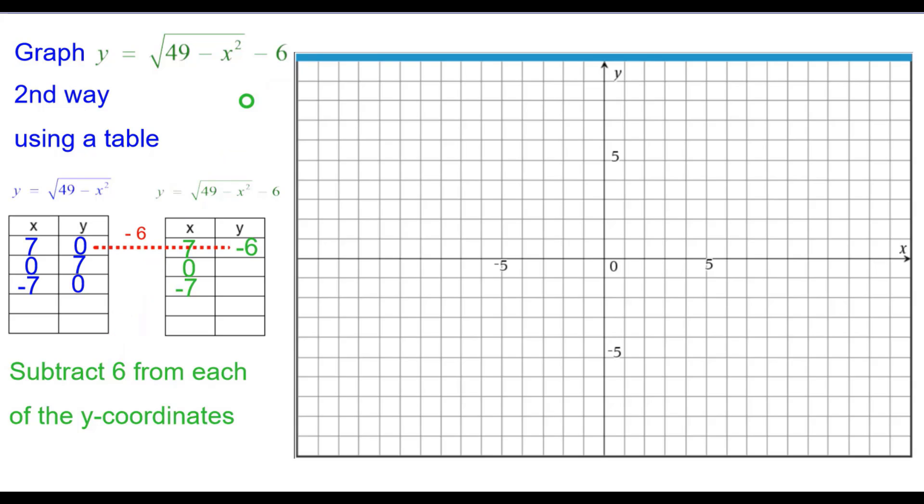So in the first entry, 0 minus 6 is negative 6. So plot (7, -6). 7 minus 6 is 1. Plot (0, 1). And again, 0 minus 6 is still negative 6. But now plot (-7, -6).